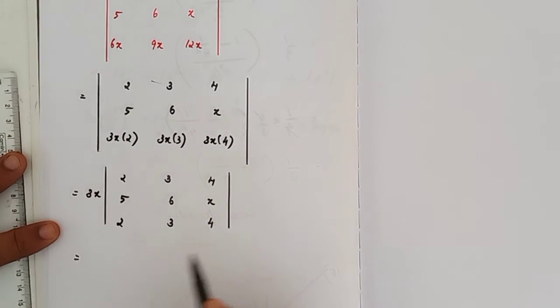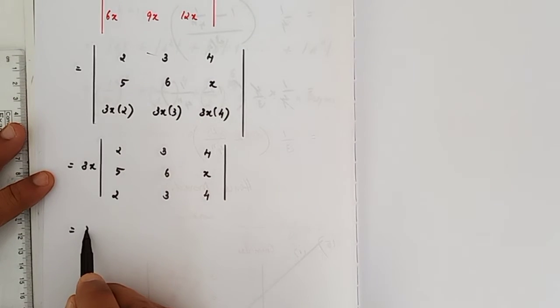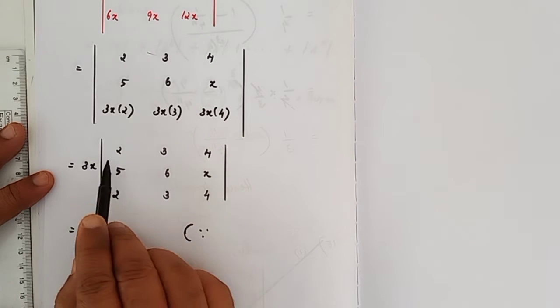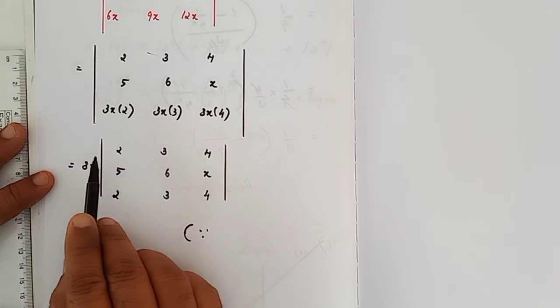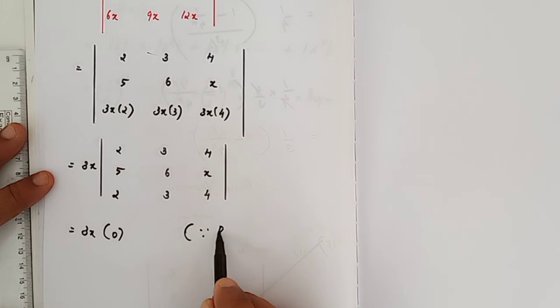That is equal to write 3x as it is. This determinant value is 0 because R1 and R3 are identical. 2, 3, 4, here also 2, 3, 4. Write the reason: R1 is identical to R3. 3x into 0, that is equal to 0.